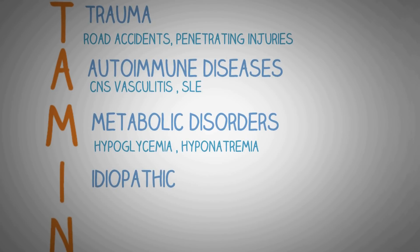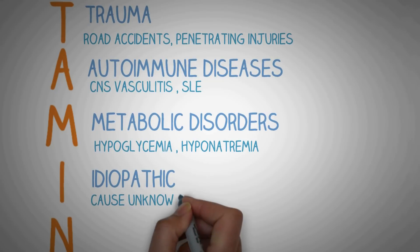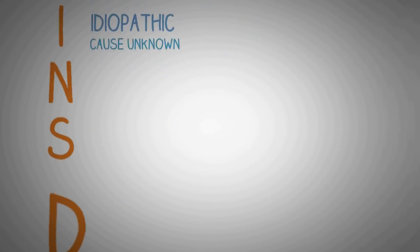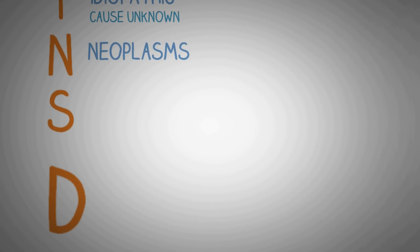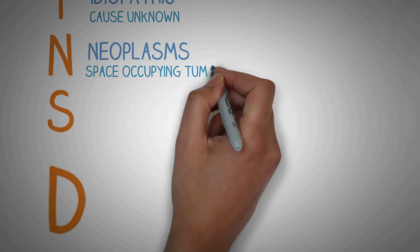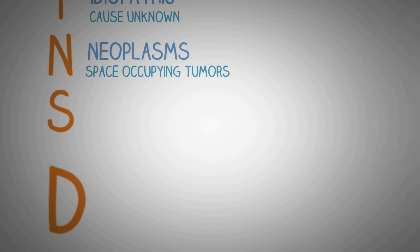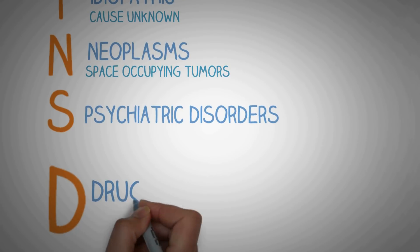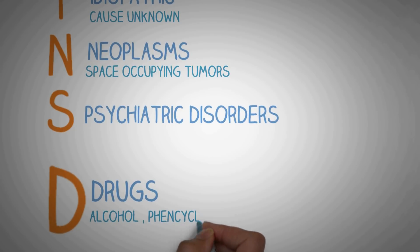Some epilepsy conditions have no known cause and are considered idiopathic epilepsies. N stands for neoplasms, which includes all space-occupying lesions of the CNS and brain. S represents psychiatric disorders which can lead to epilepsy. D is a very important category — drugs — including alcohol, phencyclidine, and cocaine, which are common drugs known to cause seizures.